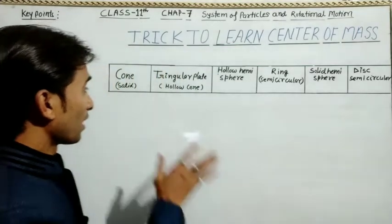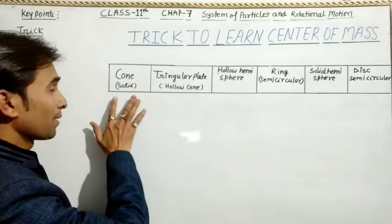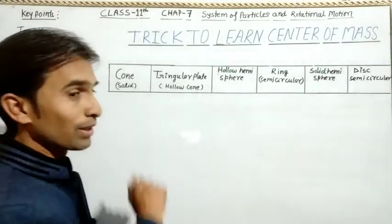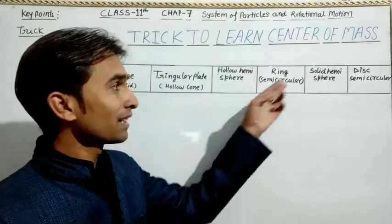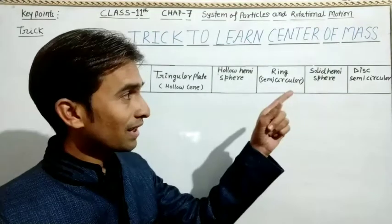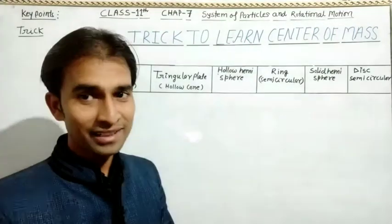How to learn the center of mass of these six bodies? Cone, solid cone, triangular plate, hollow hemisphere, ring, semicircular ring, and here solid hemisphere, and at last disc, semicircular disc.